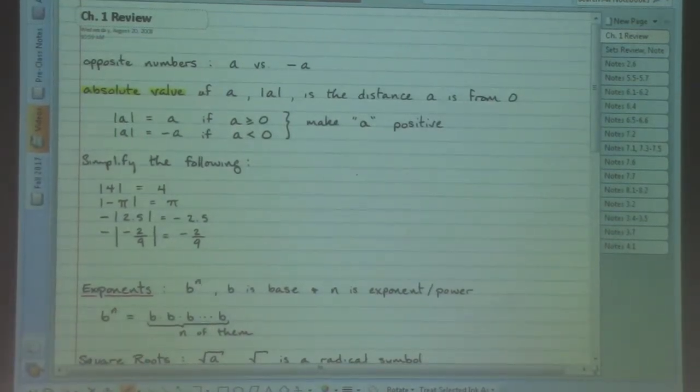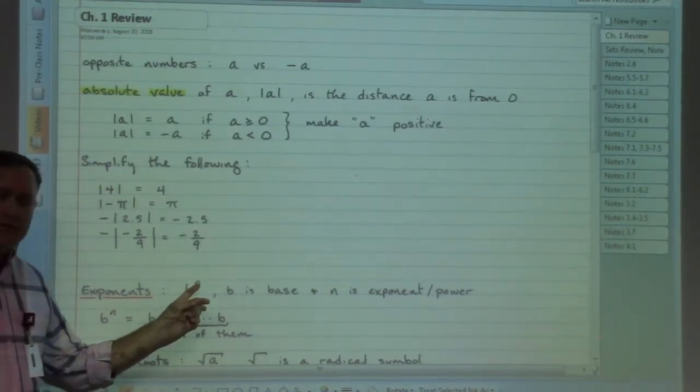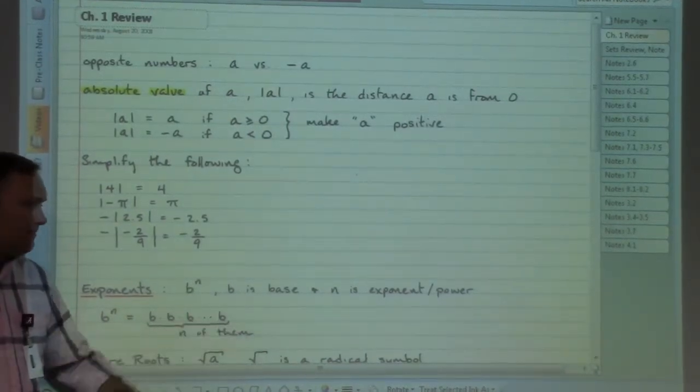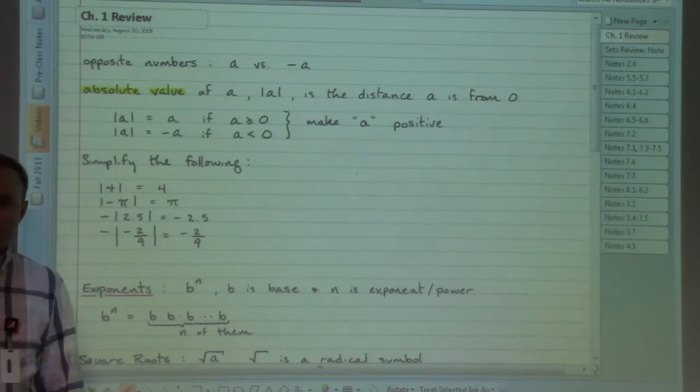As far as things that have exponents, we refer to b raised to the power n. B is the base, n is either the exponent or the power, depending on how you like to phrase it. Essentially, what we have is a special multiplication problem.